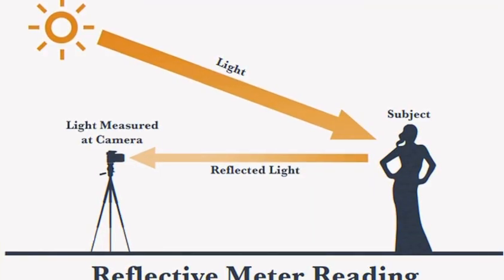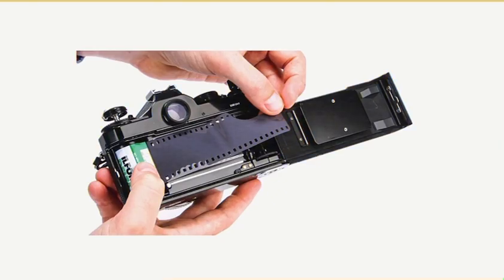That light will contain the image that you wish to capture. The light containing the image will hit the back of the camera, which contains a light-sensitive material. When this happens, a chemical reaction will take place, and your photo will develop.